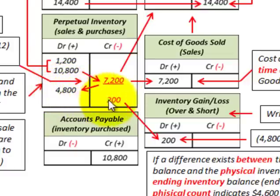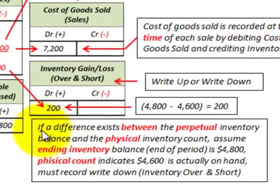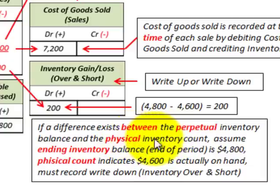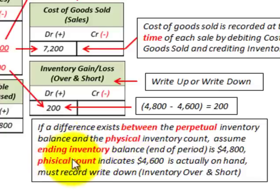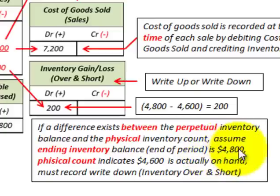When using the perpetual inventory system, you must do a physical count at the end of the period to see if what's on the books matches the actual count. If a difference exists between the perpetual inventory balance and the physical count, an adjustment is required. In our example, the book balance was $4,800, but the physical count showed $4,600 actually on hand, so we must record a write-down because the physical count is less than the book amount.